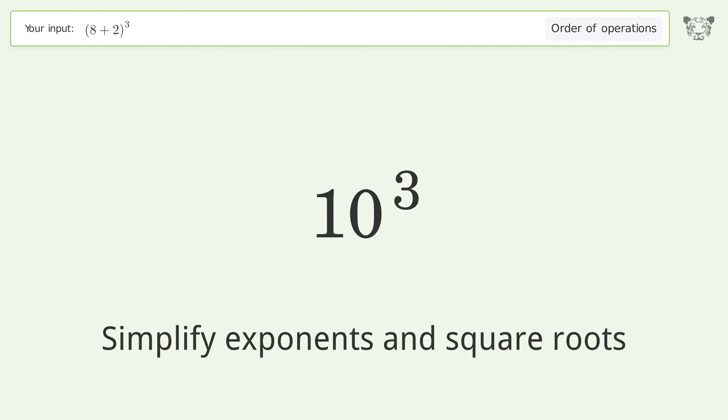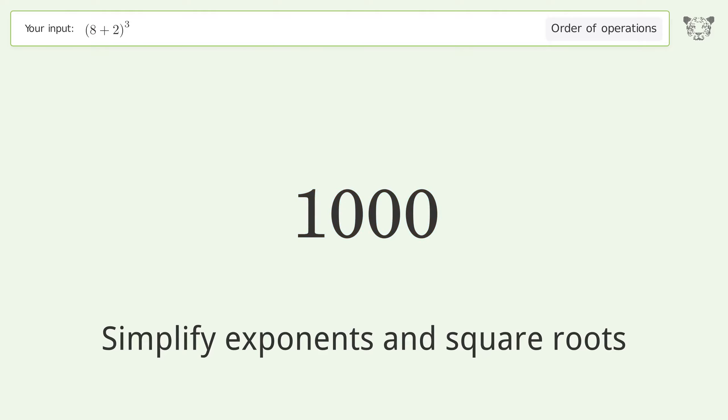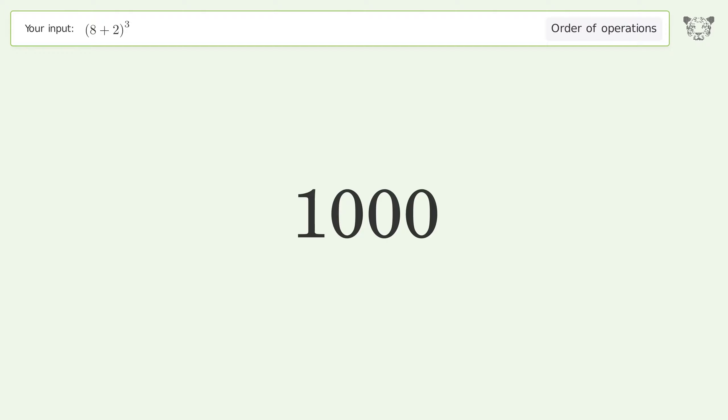Next, simplify exponents and square roots: 10 to the power of 3 equals 1000. And so the final result is 1000.